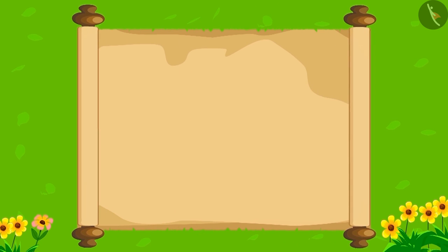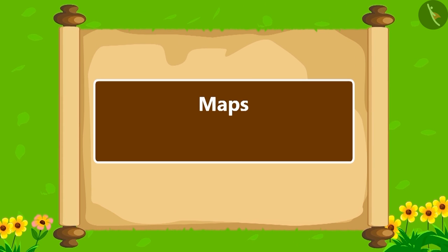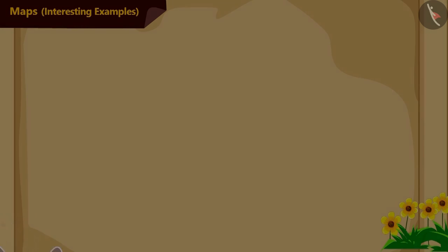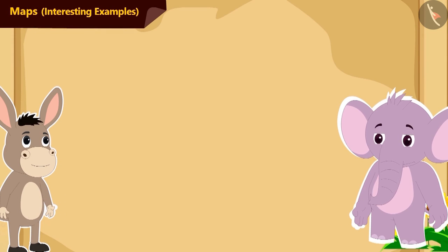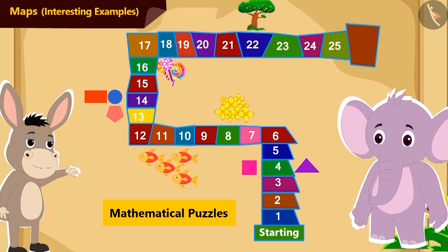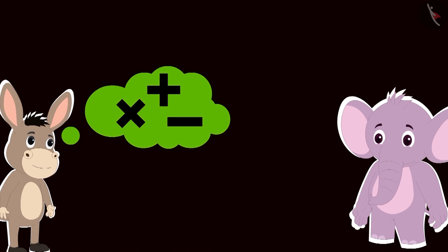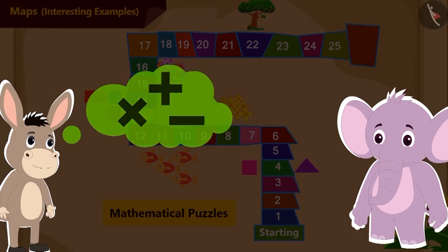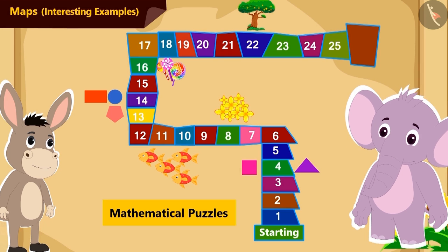Hello Children! We are looking at some interesting examples related to maps. Bhola and Appu are playing a game. Bhola has made a map like this for Appu on the floor. He will ask Appu some mathematical puzzles, and Appu has to find solutions to those puzzles.